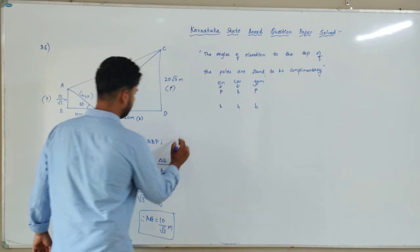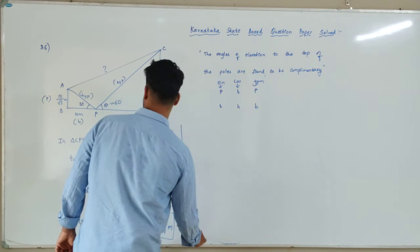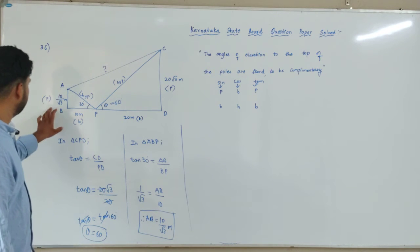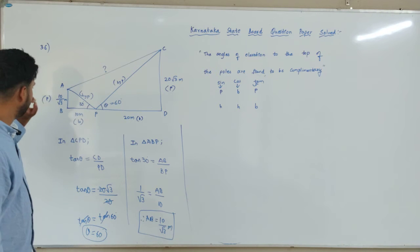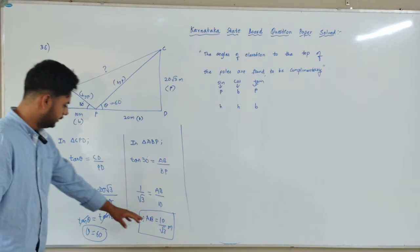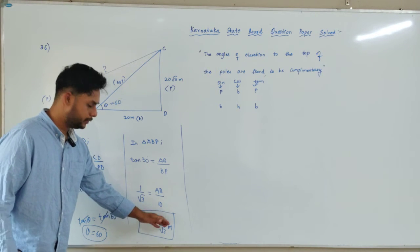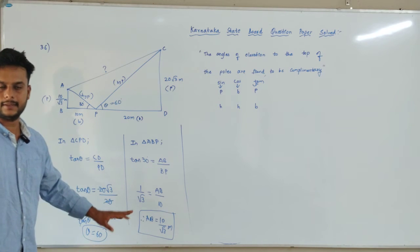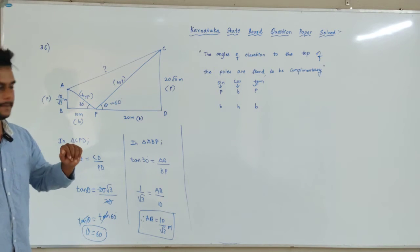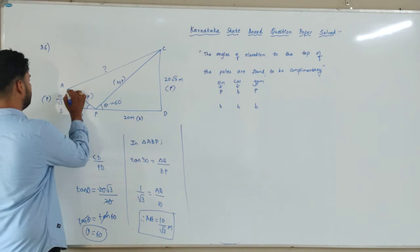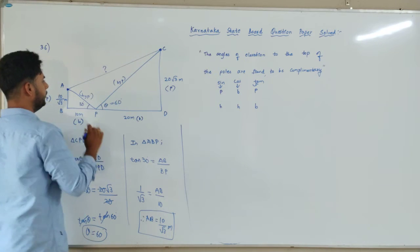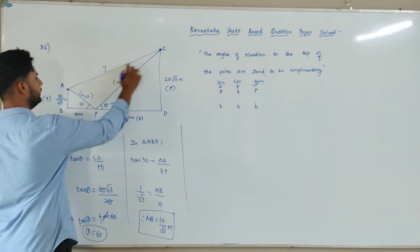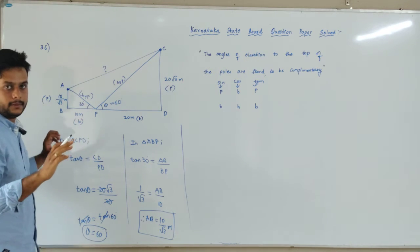After finding AB, one part of the work is over. They told me to find the height of the pole — I have found that it is 10 by root 3. If you rationalize, multiply by root 3 over root 3, you get 10 root 3 by 3 — that is also a correct answer. Next, I should find the distance between the two poles, which is AC.